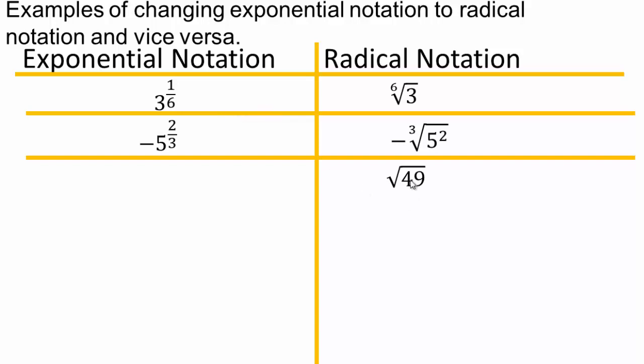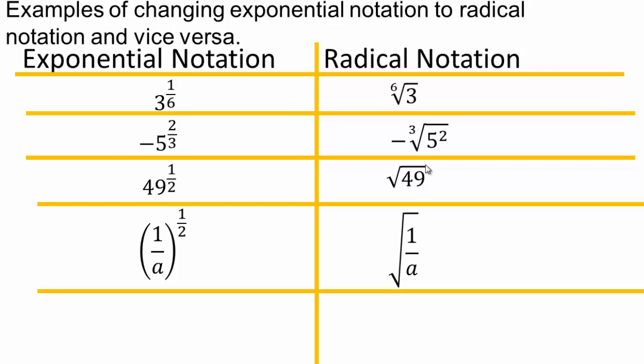Square root 49, when there is no index written, that means it's power of one-half. So here we have one over a is our radicand, and square root is the one-half power. Eight to the power one-fifth, so five is our index.